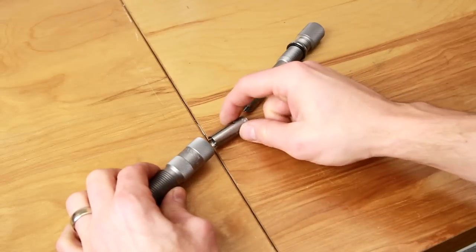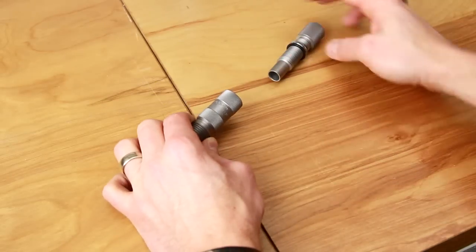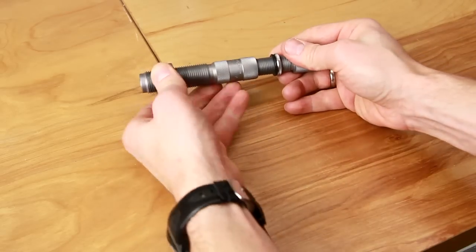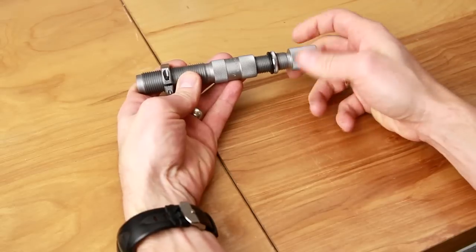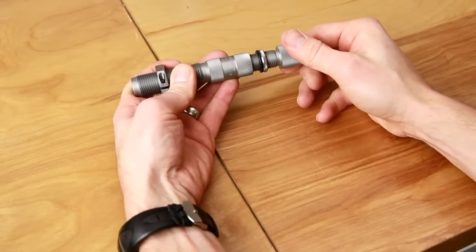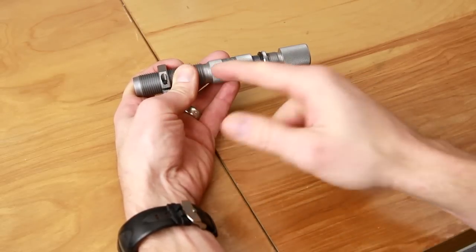To set this up we're going to install collet A, install collet B, and dial in the adjustment screw. What we want to do here is tighten it until the adjustment screw touches the collet A and collet B assembly internally.